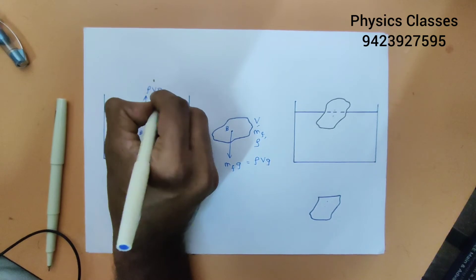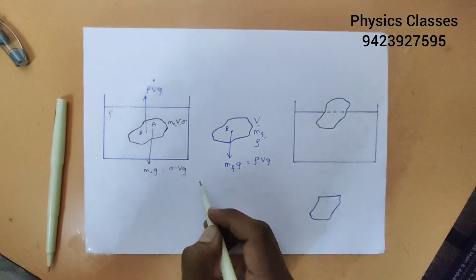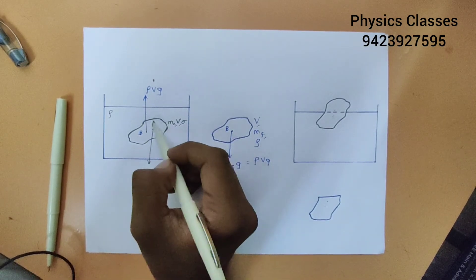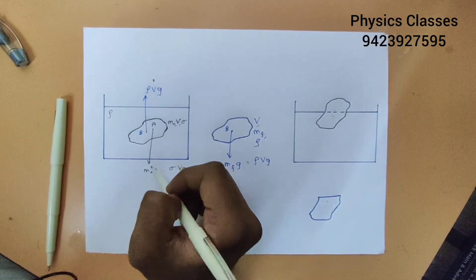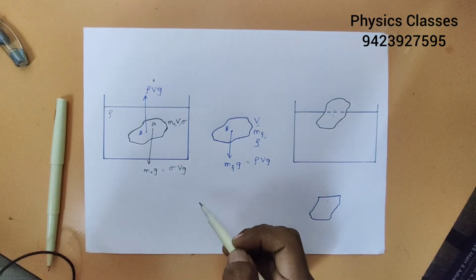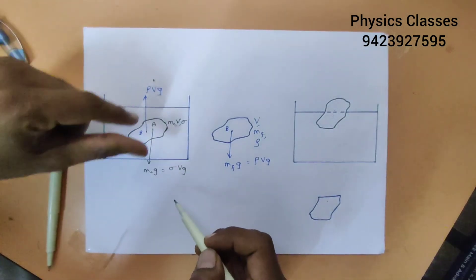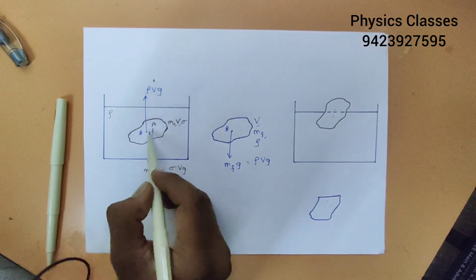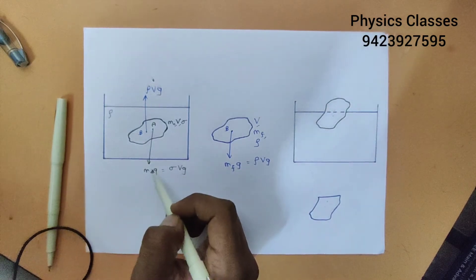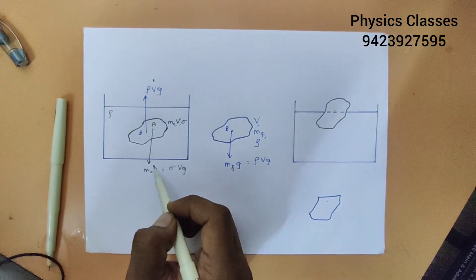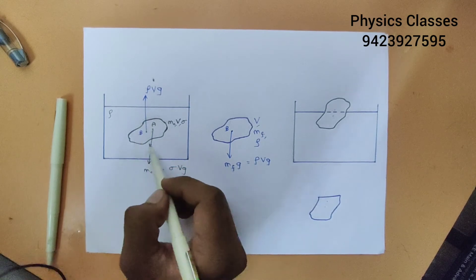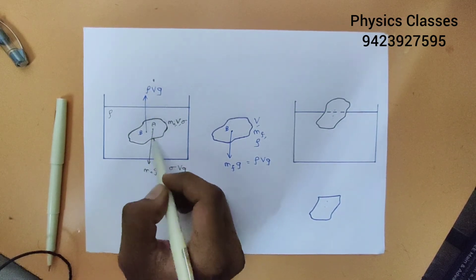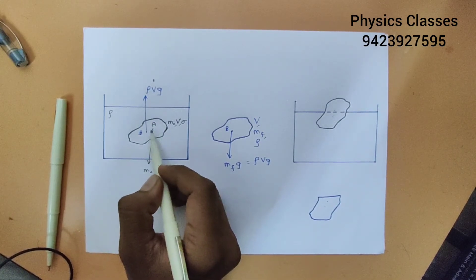Now depending on which force is greater, or which density is greater, the object will either move up or it will sink in the liquid. As it moves up or down, it will rotate and move because the two forces are not acting along the same line — they are not acting on the same point. Now if the solid was uniform and symmetric, then the two points on which the gravitational force and the buoyant force are acting will be the same point.